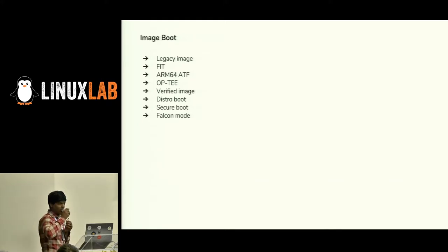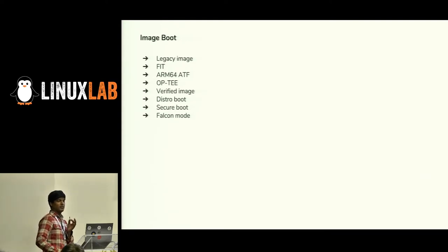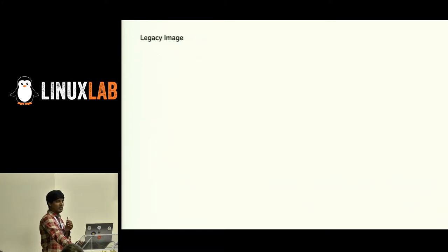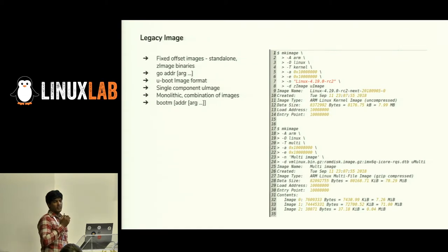The next section covers what typical images you can boot. These images are categorized based on the particular usage of the board or developer. In the early stage there was a legacy image. When you build Linux it comes with zImage. You load it at a particular location like 0x8000 for ARM 32-bit. There's also a uImage concept where you have the flexibility to load anywhere in DDR. UBoot takes care of loading at the address specified in the load address field.